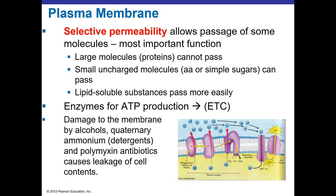This is very important when thinking about making antibiotics or other therapies — we have to get across this cell membrane barrier. Not only is it a barrier, but there are also enzymes for ATP production embedded in the cell membrane. This houses what is referred to as the electron transport chain, the ETC, which we'll talk about in Chapter 5 when we cover metabolism.